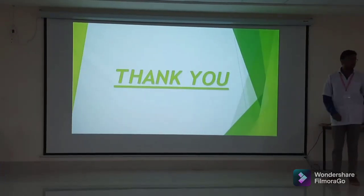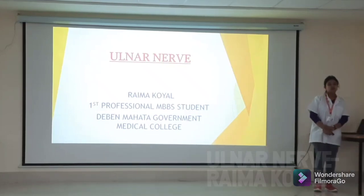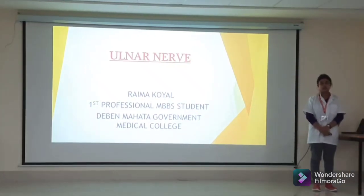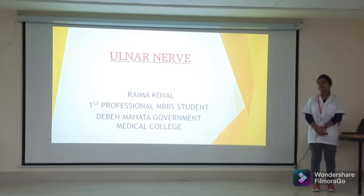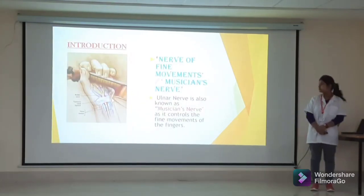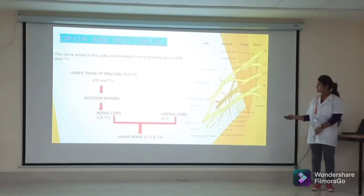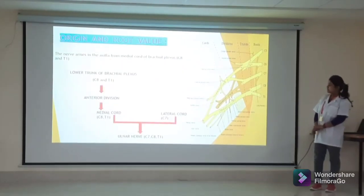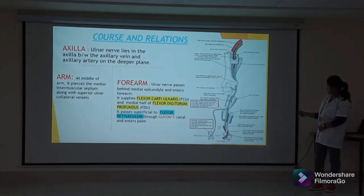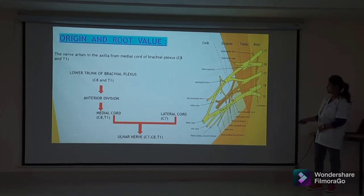I would now like to invite Rana Koyal to discuss the ulnar nerve — one of the most important nerves of the brachial plexus. The ulnar nerve is known as the nerve of fine movements, as it controls fine movements of the fingers. It arises from the medial cord with root value C8 and T1. The anterior division of the lower trunk together forms the ulnar nerve with root value C7, C8, and T1.